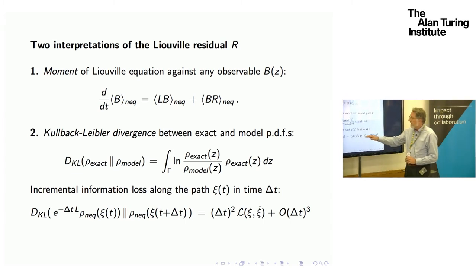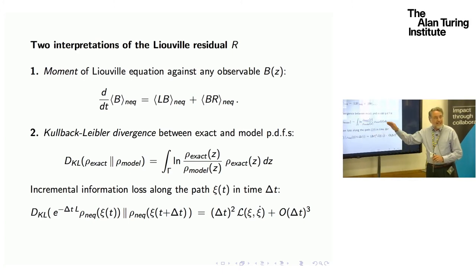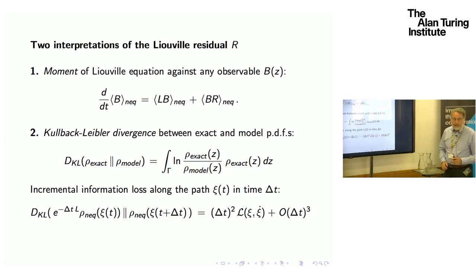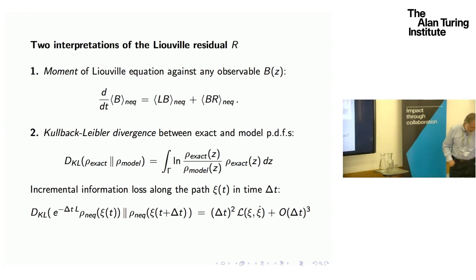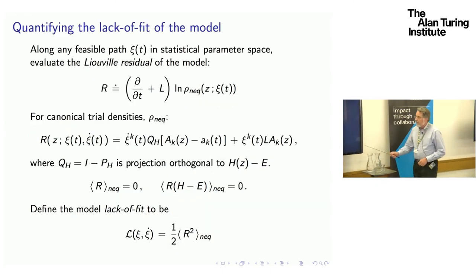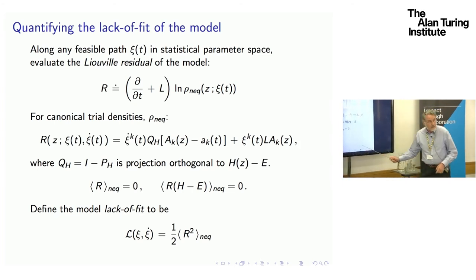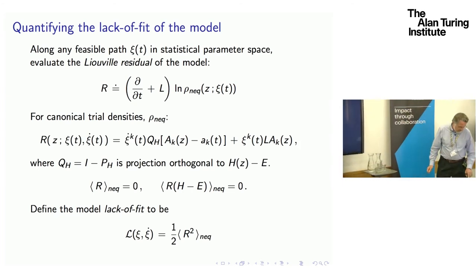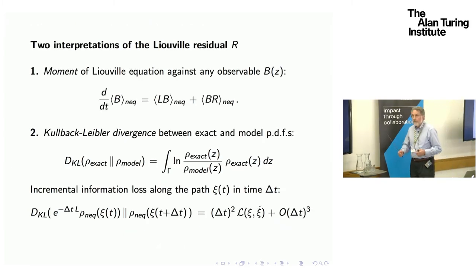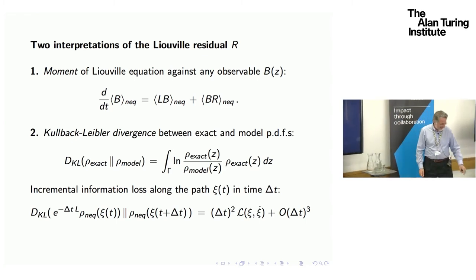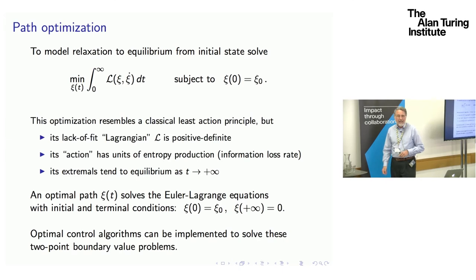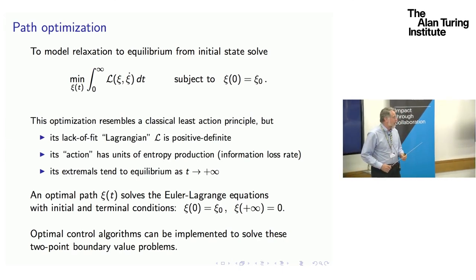If we expand that for a Taylor series in delta t, the leading order term is nothing other than this mean square of the Liouville residual. This is precisely the same as the way Fisher information is derived from relative entropy in a parametric model, except this ties it to the dynamics of the model path psi. So this thing L is precisely the information rate loss due to modeling the dynamics rather than doing the full distribution.